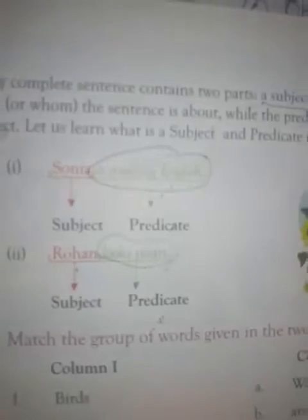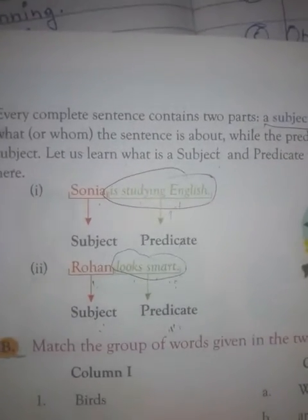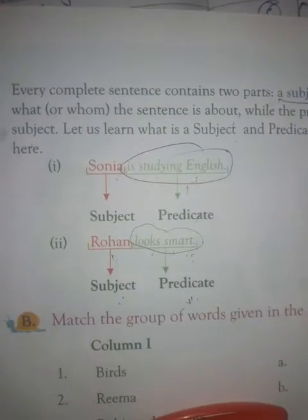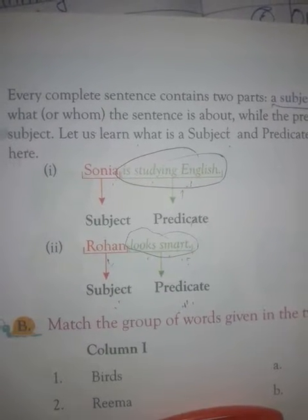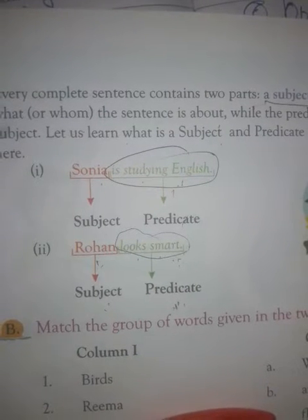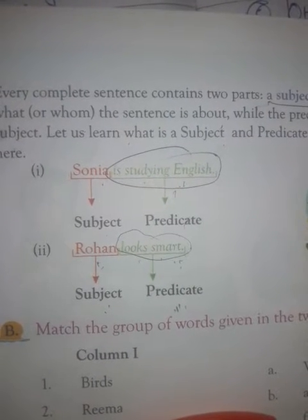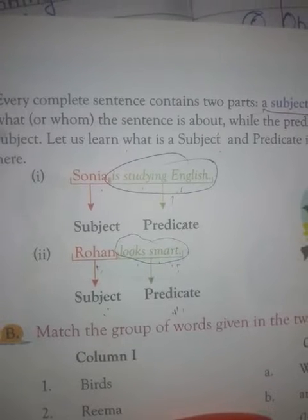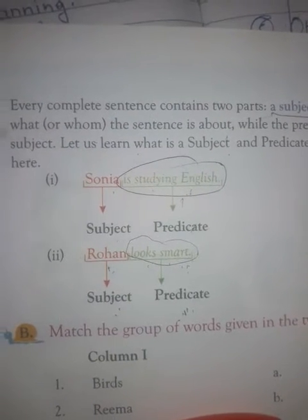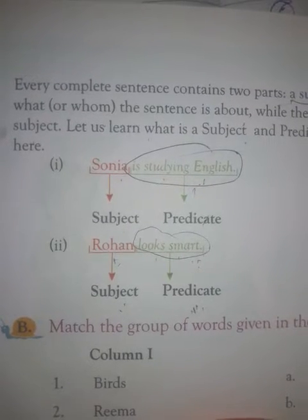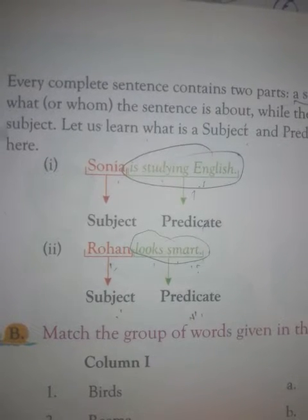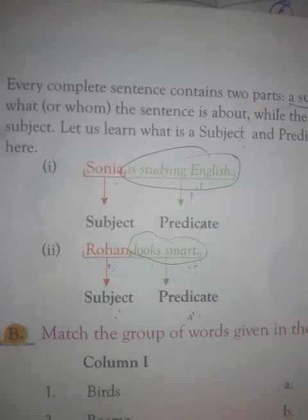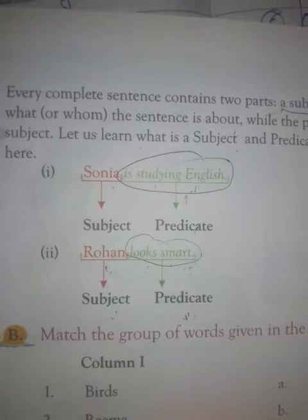Let us learn with examples. 'Sonia is studying English.' Here, 'Sonia' is the subject and 'is studying English' is the predicate — the action done by Sonia. 'Rohan looks smart.' Here, 'Rohan' is the subject and 'looks smart' is the predicate because it describes Rohan's personality.